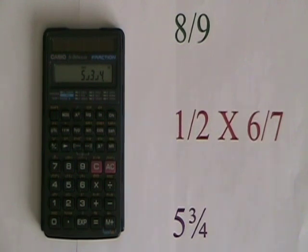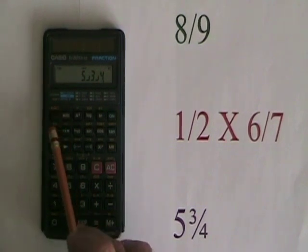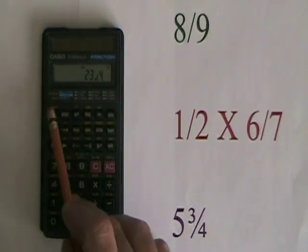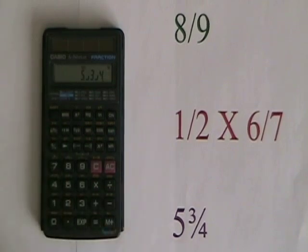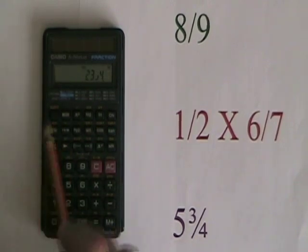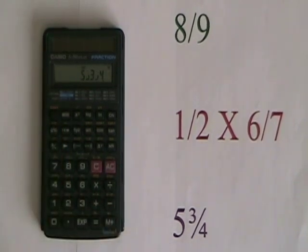We can convert between mixed number and improper fraction by doing shift ABC, and we can go back and forth between the improper fraction and the mixed number by doing shift ABC again as many times as we want. This is how we use the Casio FX-260 to do some of the operations with the fraction key.